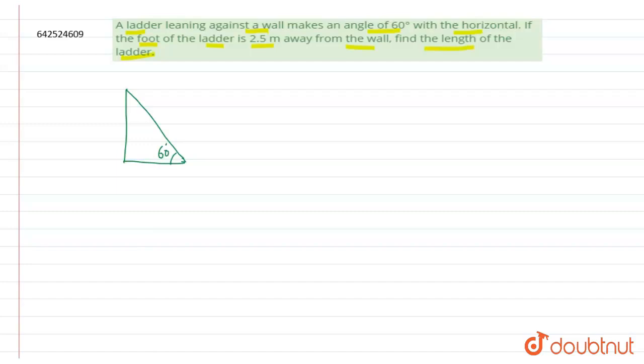So this angle given is 60 degree. Now let us mark this figure A, B, C. So this becomes 90 degree. The length of the ladder we have to find, so we can take that as x meters.